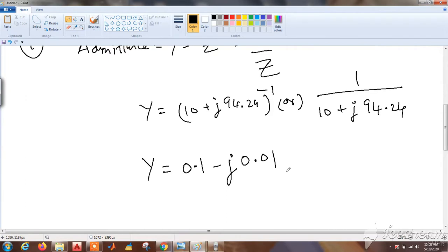We get admittance Y as 0.1 minus j0.01. This is minus because we know that 1 by imaginary term is equal to minus of the imaginary term, we know from basic complex numbers.